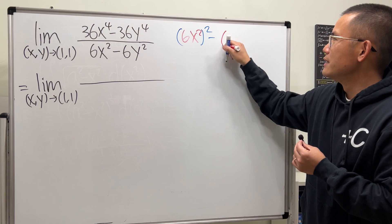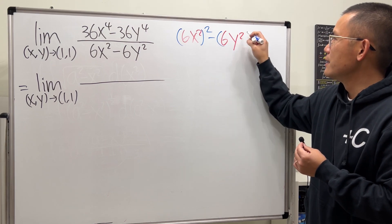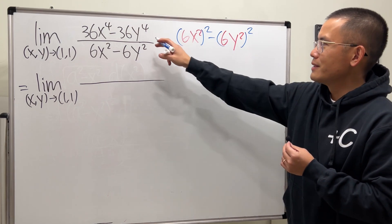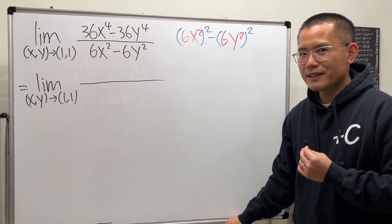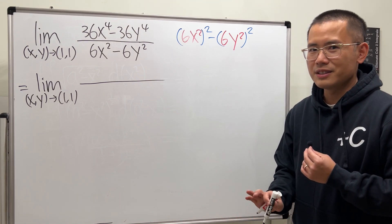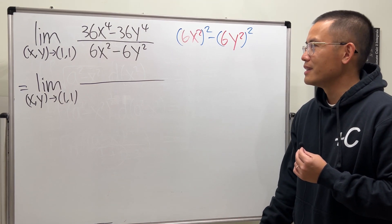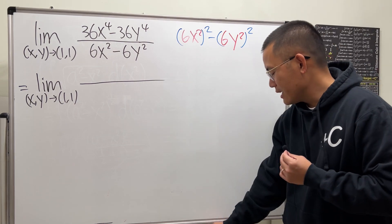So this right here gives you - look at that as (6x²)² minus (6y²)². That's the top. Yeah, I know I can factor out 6 or 36, but it doesn't really matter because things will cancel anyway.